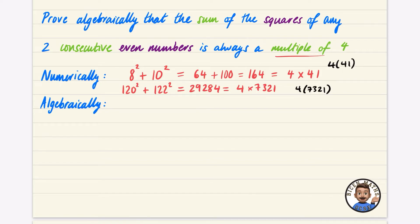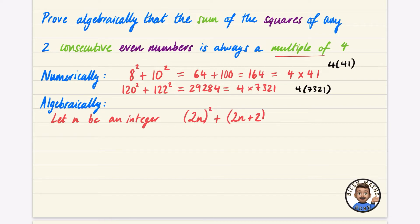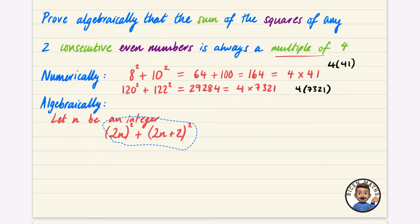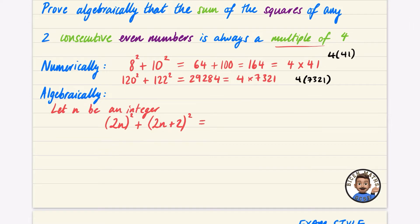Let n be an integer. One even number is 2n, and the consecutive even number is 2n plus 2. We want the sum of their squares: (2n) squared plus (2n plus 2) squared. We want to show this is a multiple of 4, so we need to be able to take out a factor of 4. Squaring 2n gives 4n squared.